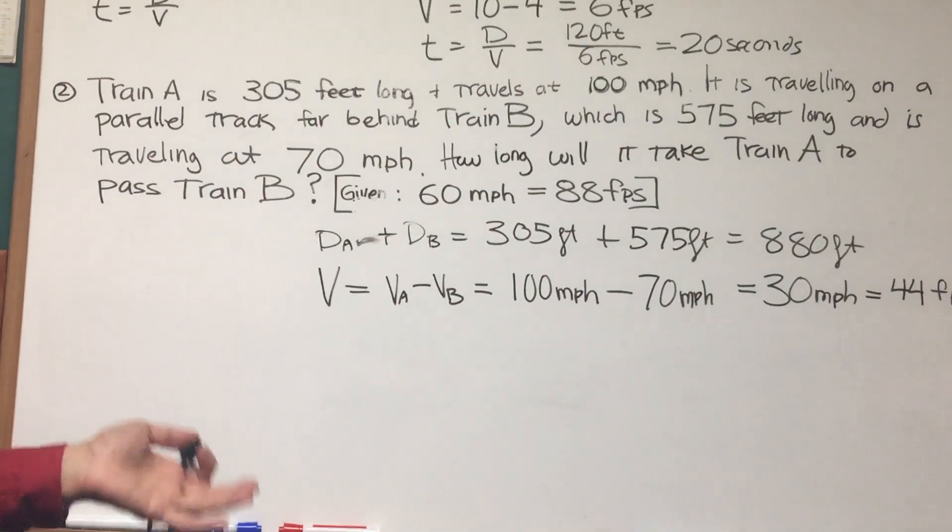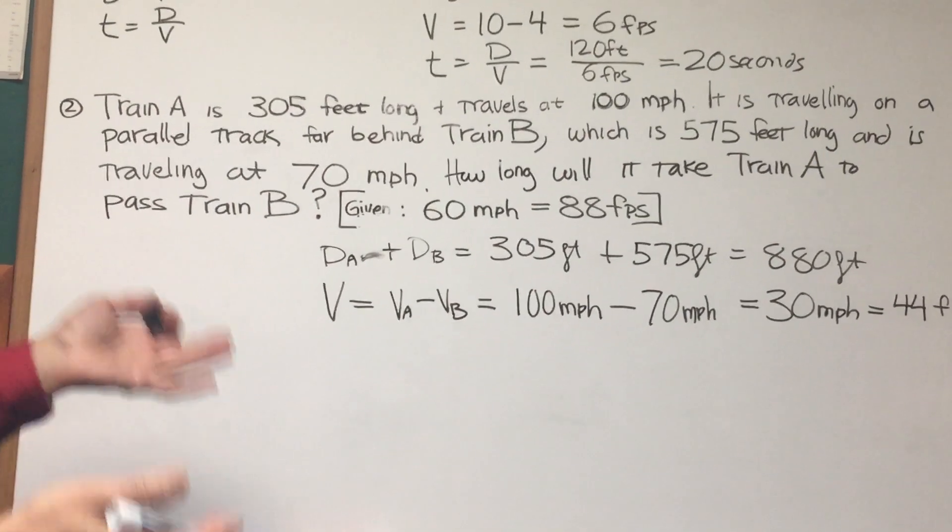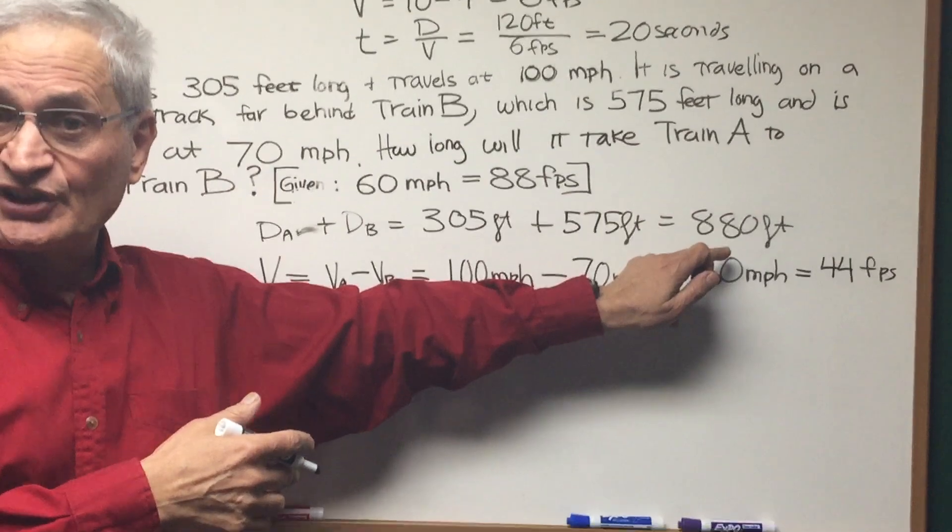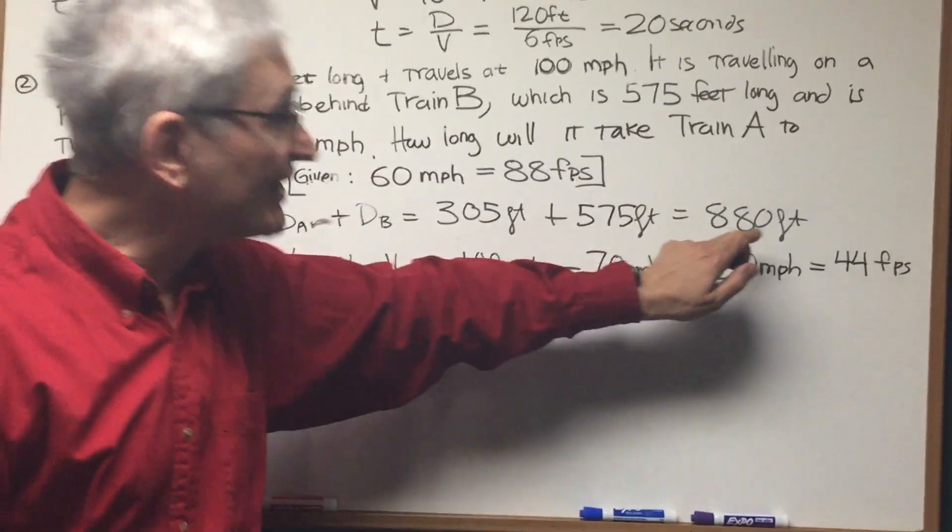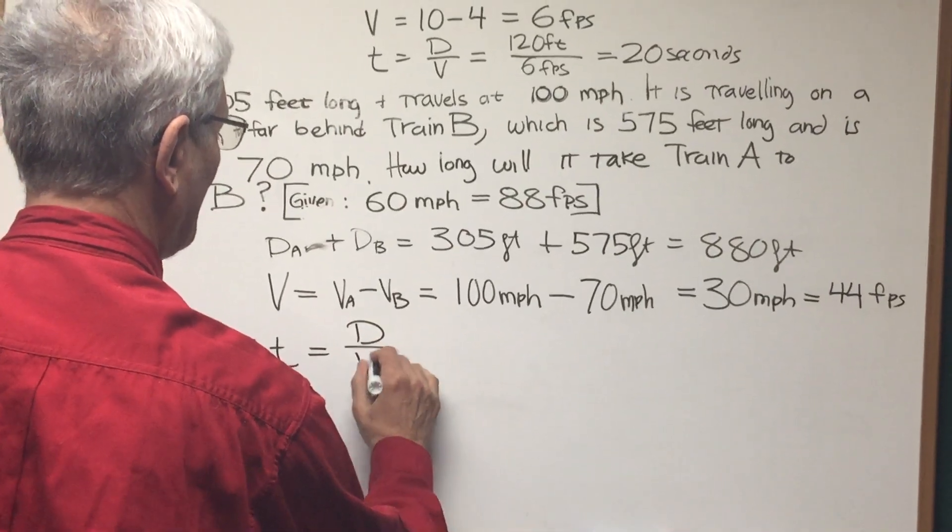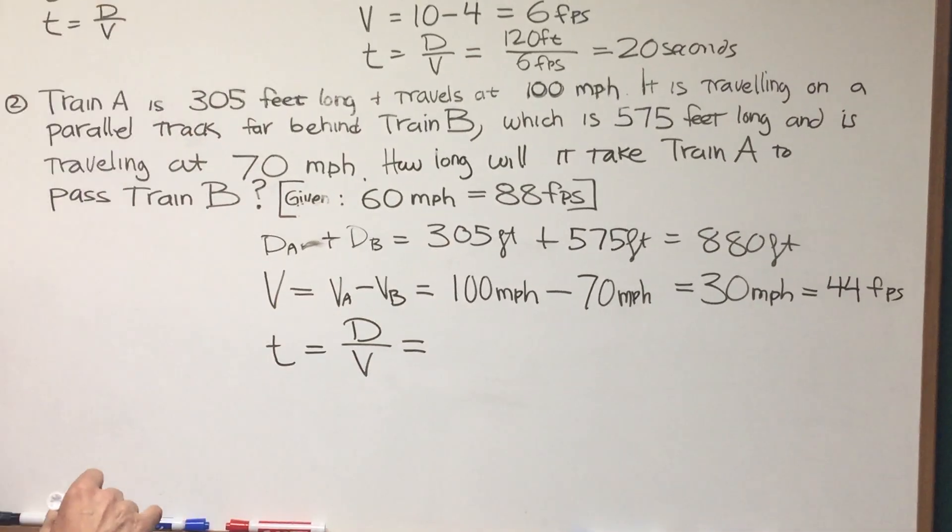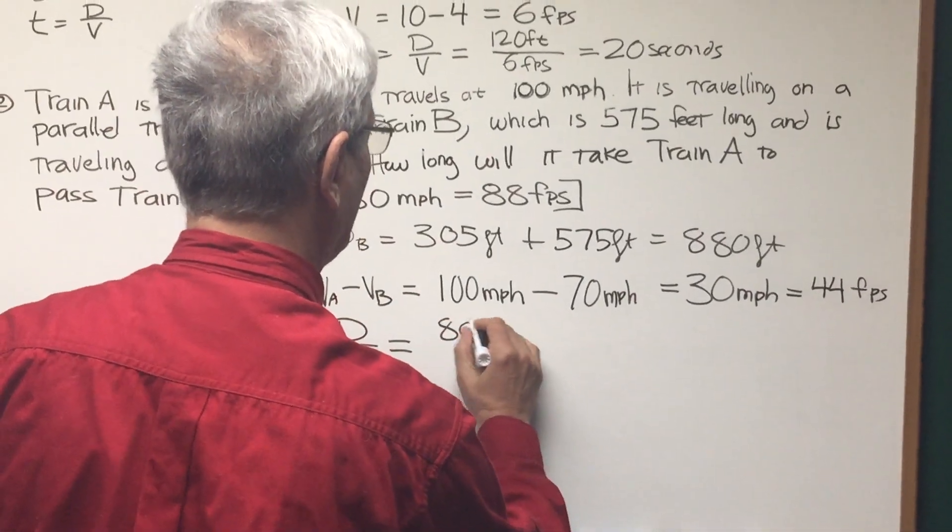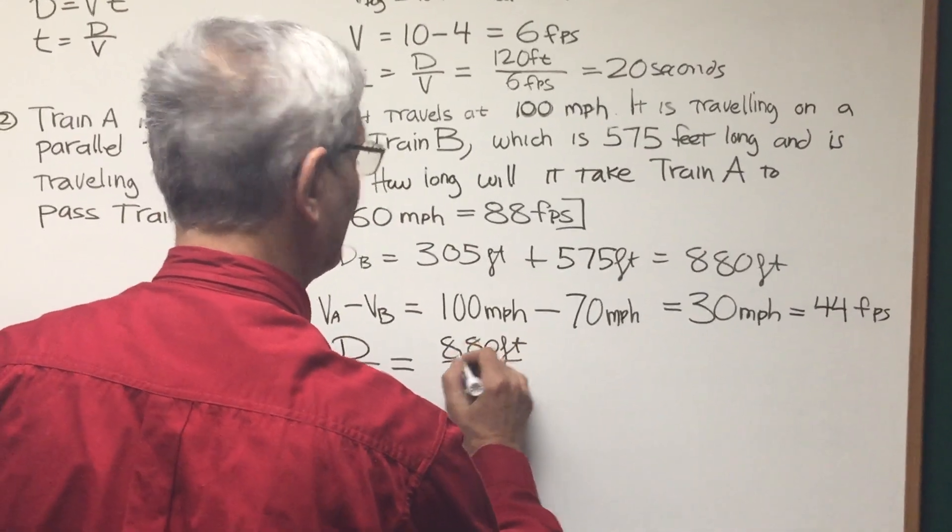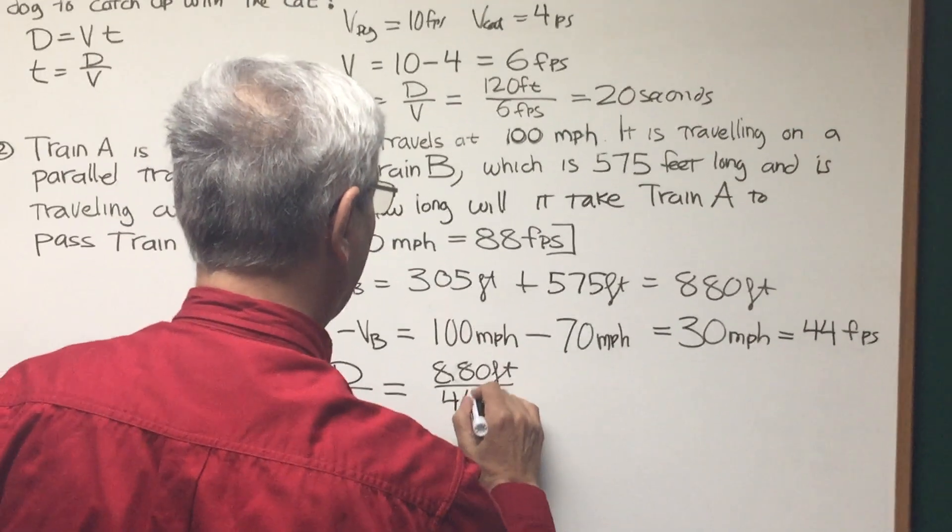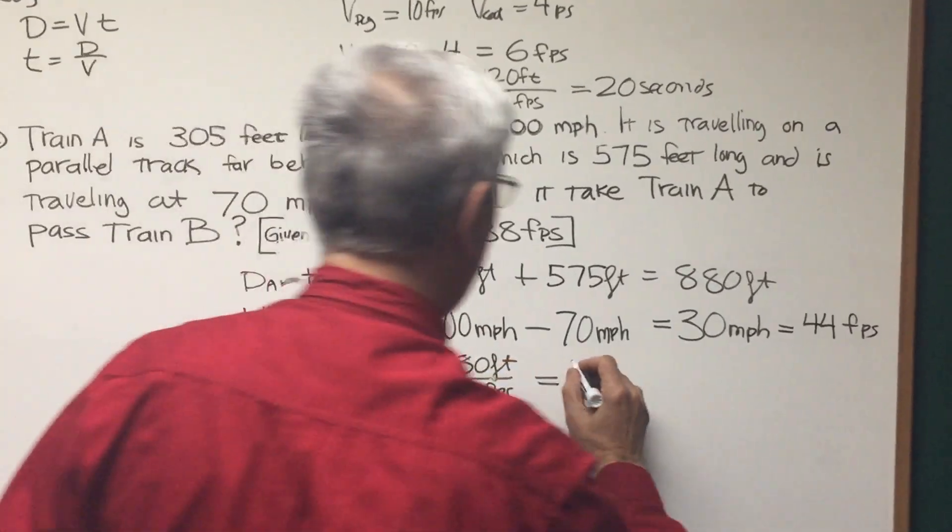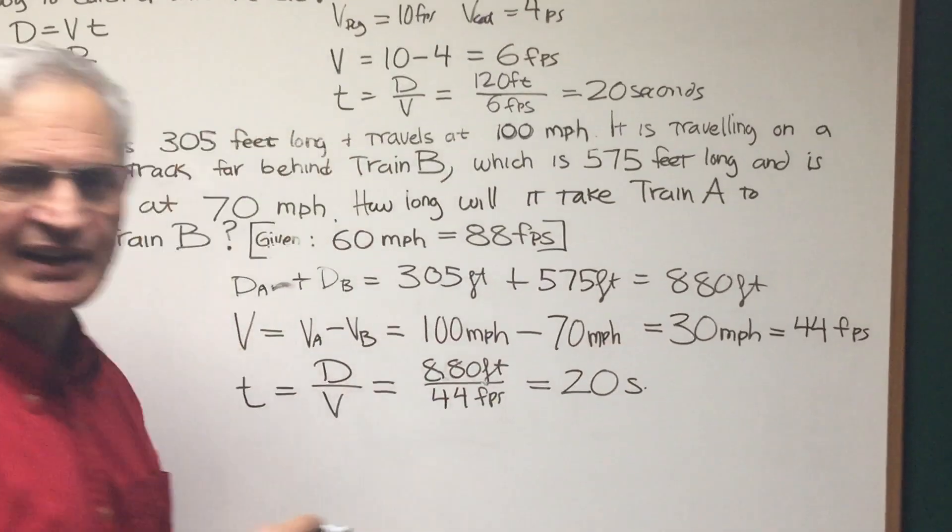Basically the problem is: how long will it take train A, traveling at a relative velocity of 44 feet per second, to travel the distance equal to the sum of the two train lengths, 880 feet? We're going to use time equals distance over velocity. The distance is 880 feet and the velocity is 44 feet per second. 44 goes into 880 twenty times, so therefore we get the solution: 20 seconds.